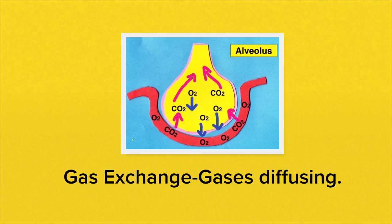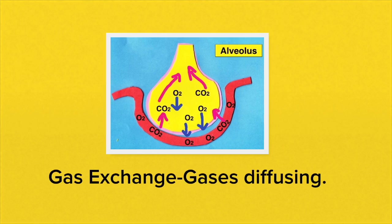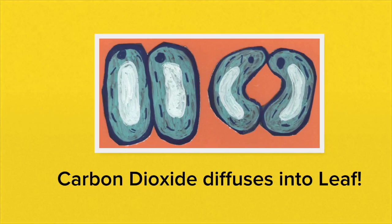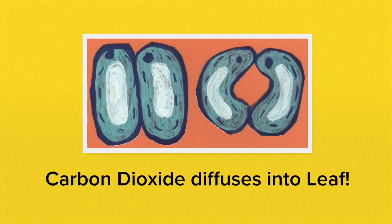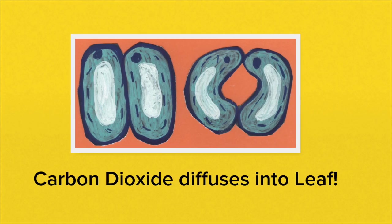An example of diffusion would be gas exchange in the alveoli of the lungs. Another example would be carbon dioxide diffusing into the leaf through the stomata and oxygen out.